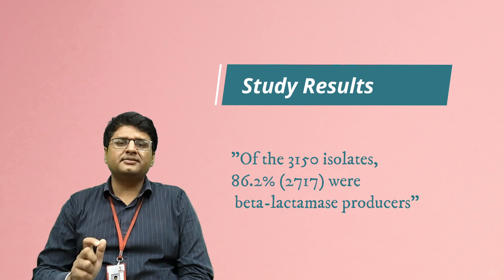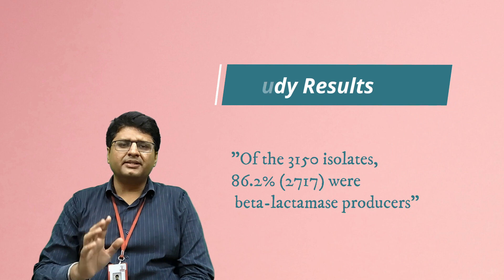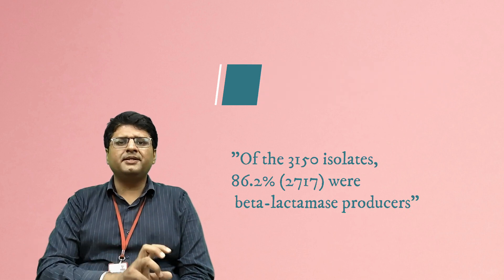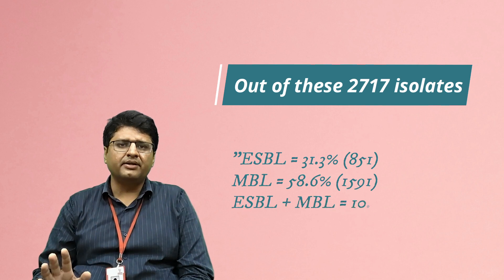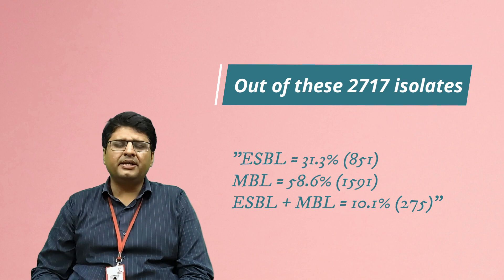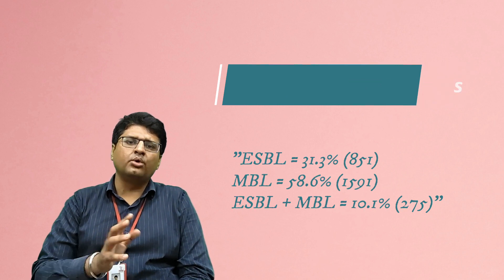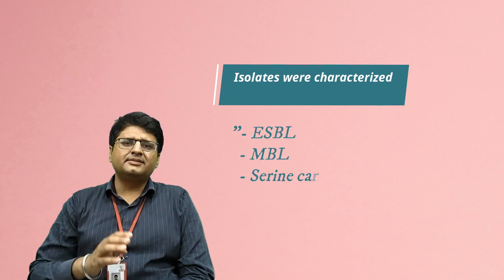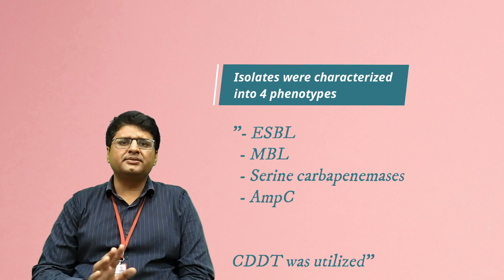The beta-lactamase producers included ESBLs (extended-spectrum beta-lactamases), MBLs (metallo-beta-lactamases, which are carbapenemase enzymes), and some isolates were both ESBL and MBL producers. Out of 2,717 isolates: ESBL producers were 31% (851), MBL producers were 58.6% (1,591), and ESBL plus MBL were 10% (275 isolates).